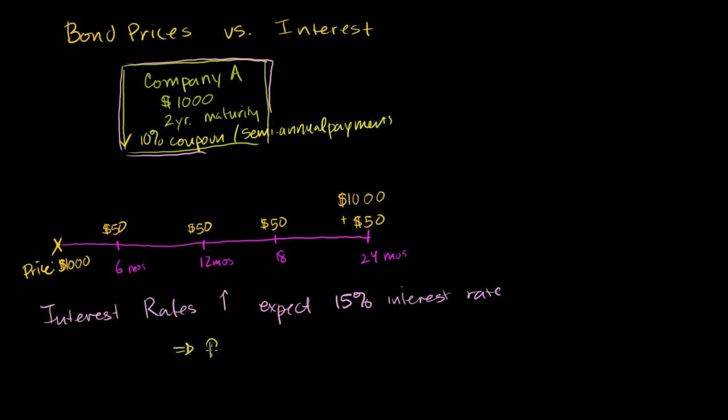So the price will go down. Or you could essentially say that the bond would be trading at a discount to par.